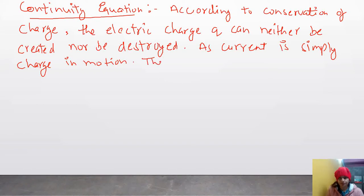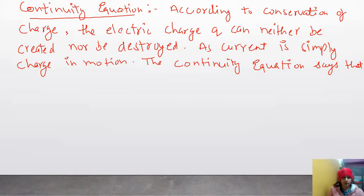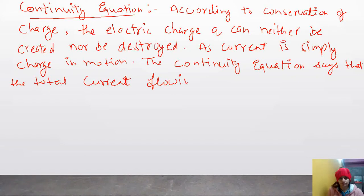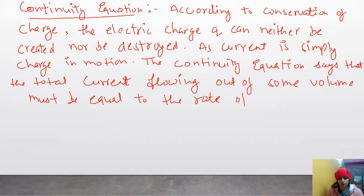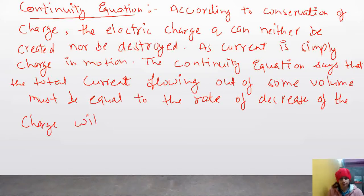The continuity equation says that the total current flowing out of some volume must be equal to the rate of decrease of the charge within that total volume. Charge वहां से कितना कम हो रहा है, उसके बराबर current होगा within that total volume.